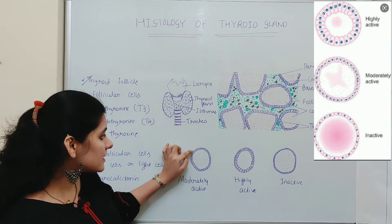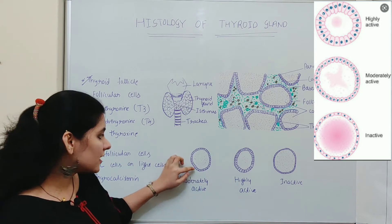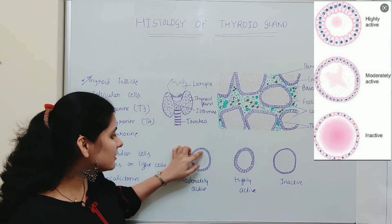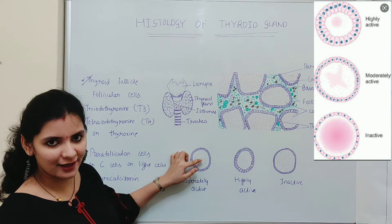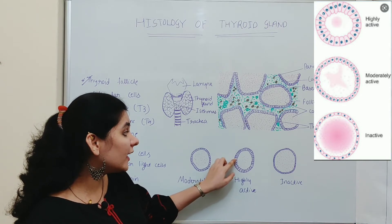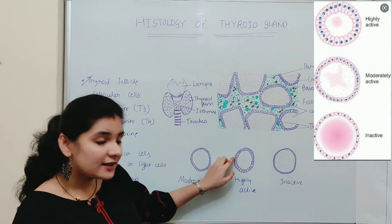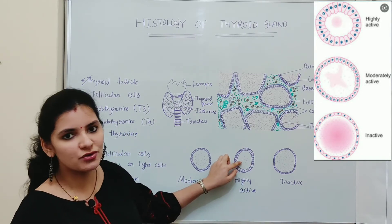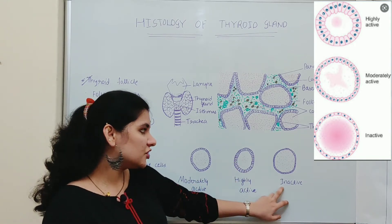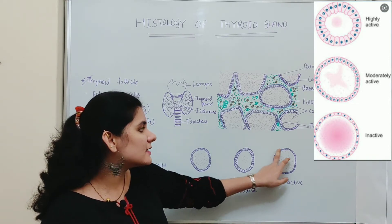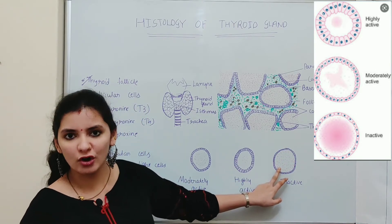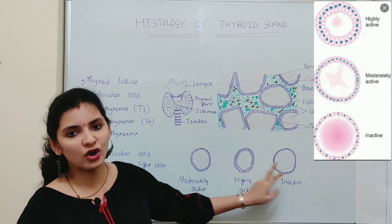In the moderately active condition, the follicular cells are cuboidal in shape and the follicular cavity consists of a moderate amount of colloid. In the highly active thyroid follicle, it shows columnar or elongated follicular cells and contains a scanty amount of colloid — very little colloid. In the third condition, where the thyroid follicles are inactive, the follicular cells are squamous or flat in shape and enclose an abundant amount of stored colloid.